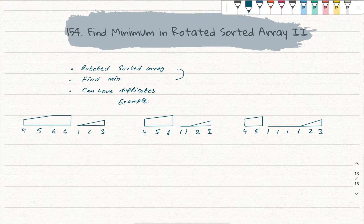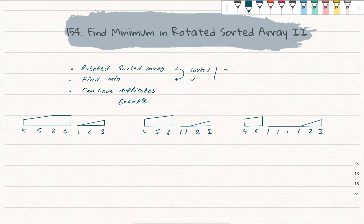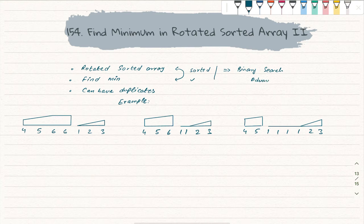The first thing we look at is these two points: it is a sorted array and we have to find the minimum element. Considering these two conditions, for sure we will try binary search. In this binary search we will use advanced binary search — we will make some changes and then we can solve this question easily.